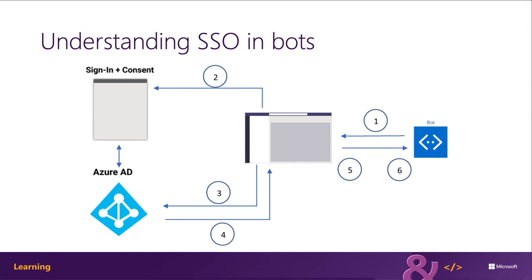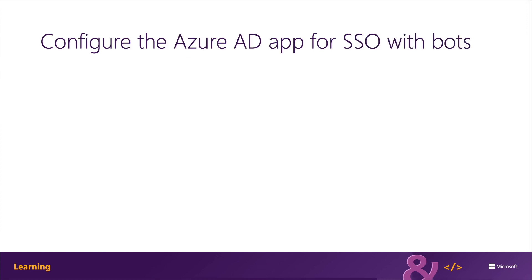From there, the bot framework can use this ID token to obtain an access token using the OBO flow. All Microsoft Teams apps that implement SSO must have an associated Azure AD application registered. The Azure AD app for a bot shares many characteristics with tab SSO — including a client ID and client certificate or secret, permissions that have been set, the ability to obtain tokens with the OAuth 2 implicit flow, the access-as-user permission, and pre-authorized Microsoft Teams clients. These are shared requirements when implementing SSO for Microsoft Teams with both tabs and bots.